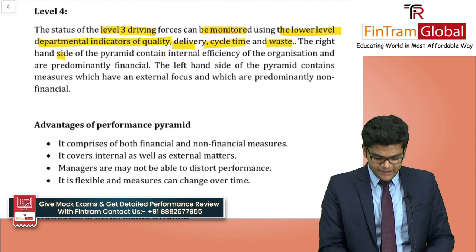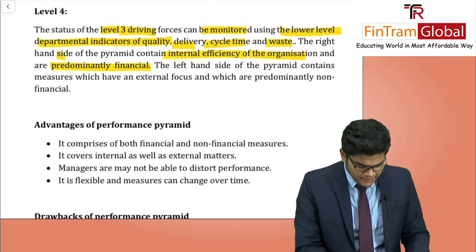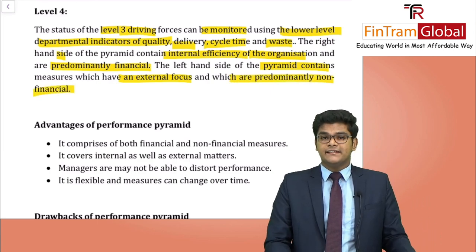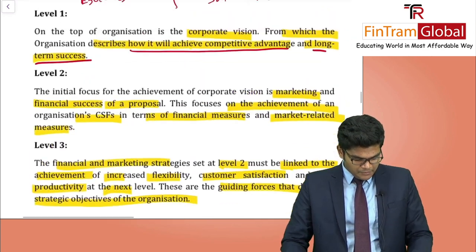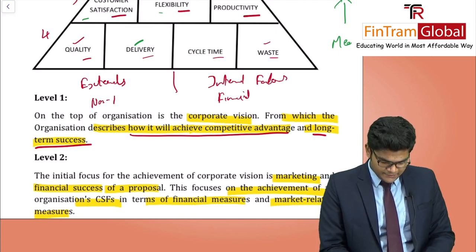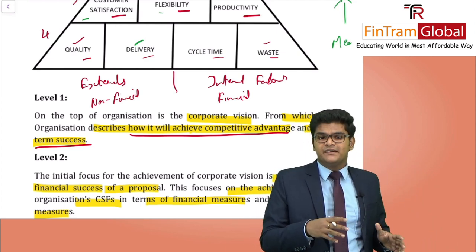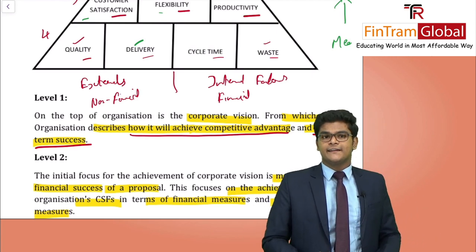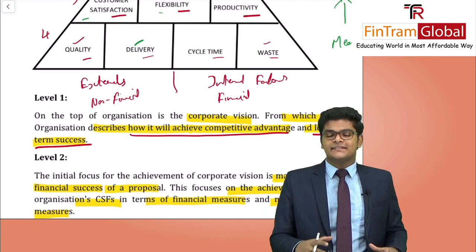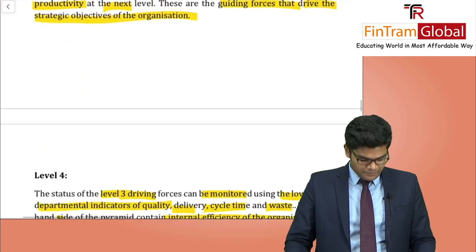The right-hand side of the pyramid contains internal efficiency measures, which are predominantly financial in nature. The left-hand side contains measures with an external focus, which are predominantly non-financial. So the performance pyramid looks at both internal and external factors, as well as both financial and non-financial aspects — making it a strong alternative to the balanced scorecard approach.